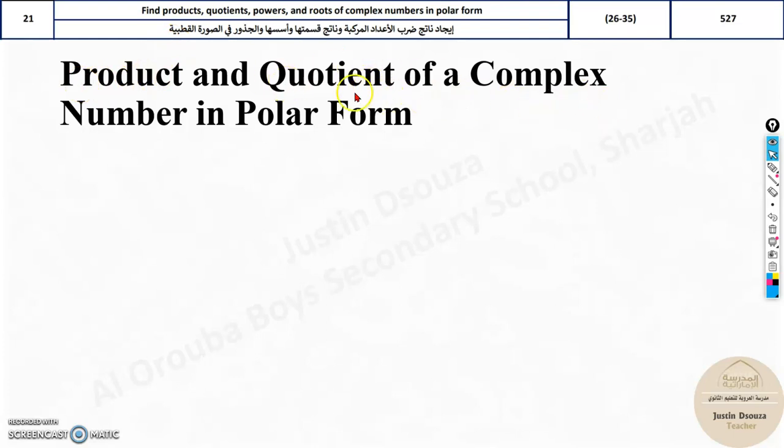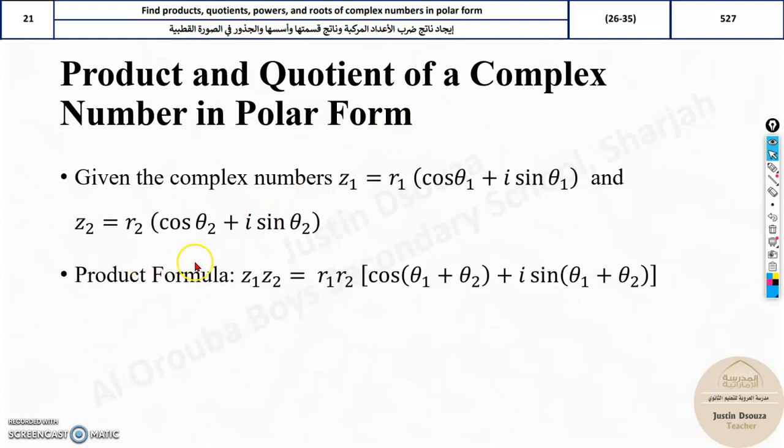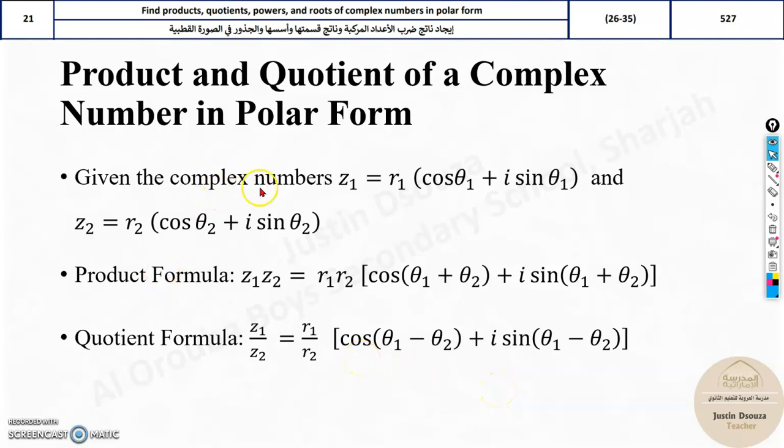Now we will go to the 21st topic. It is the product and quotient of a complex number in polar form. Before we go ahead, you need to remember these formulas. The given complex numbers will be in Z1 equals r1(cos θ1 + i sin θ1) and Z2 the same thing, only the subscript is 2. Before I continue, you must remember, the complex numbers will be given in polar form. It needs to be in polar form, only then you can apply these formulas. So whatever is the question, if it is not in polar form, convert to polar form and then solve it by using these formulas.